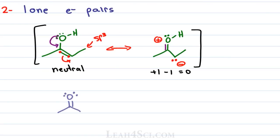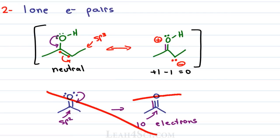Contrast this with a lone pair of electrons on a ketone oxygen. If you try to resonate those electrons down, the carbon is sp2 but it's already double-bonded to oxygen — there is nothing to kick out. If you try to show a resonance there, carbon has too many electrons in its octet, and that is not allowed.